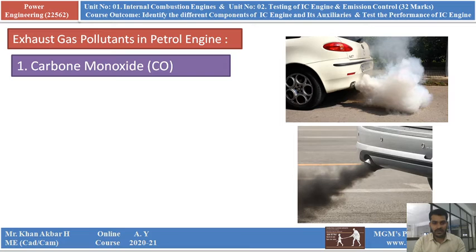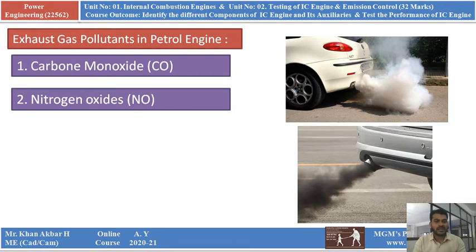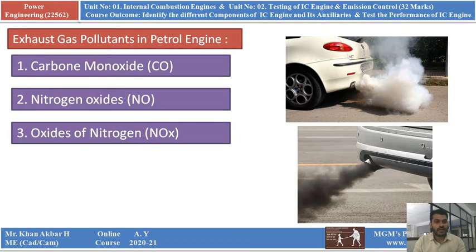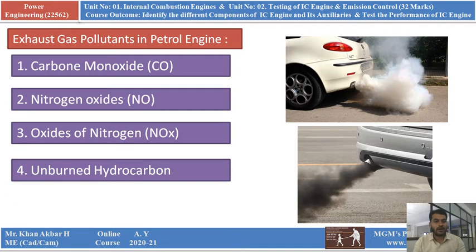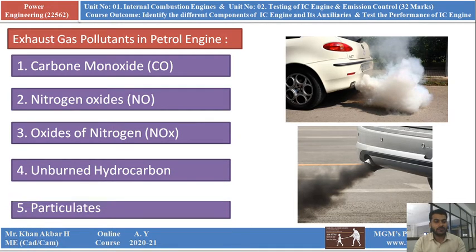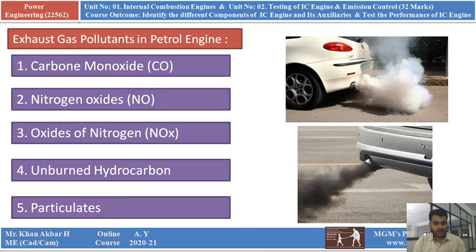The first one is carbon monoxide — short form CO. The second is nitrogen oxide — short form NO, and oxides of nitrogen can be called as NOx. Next will be the unburnt hydrocarbon. And the fourth one will be the particulates. So one by one we will discuss carbon monoxide, nitrogen oxides, unburnt hydrocarbon, and the particulates.